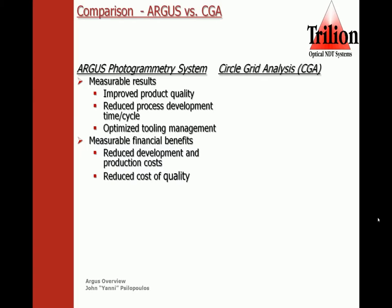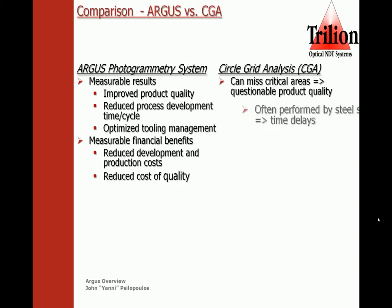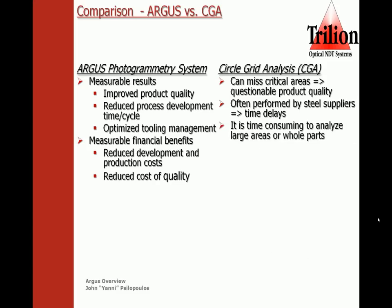On the other hand, circle grid analysis can miss critical areas and produce questionable product quality. It is often performed by steel suppliers, which can include time delays and can be very costly for a company.